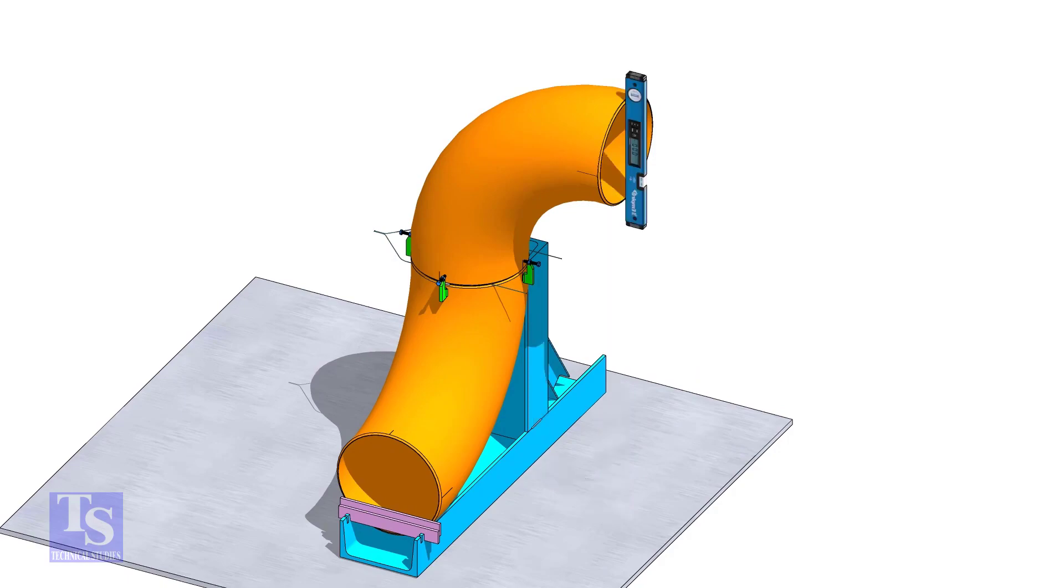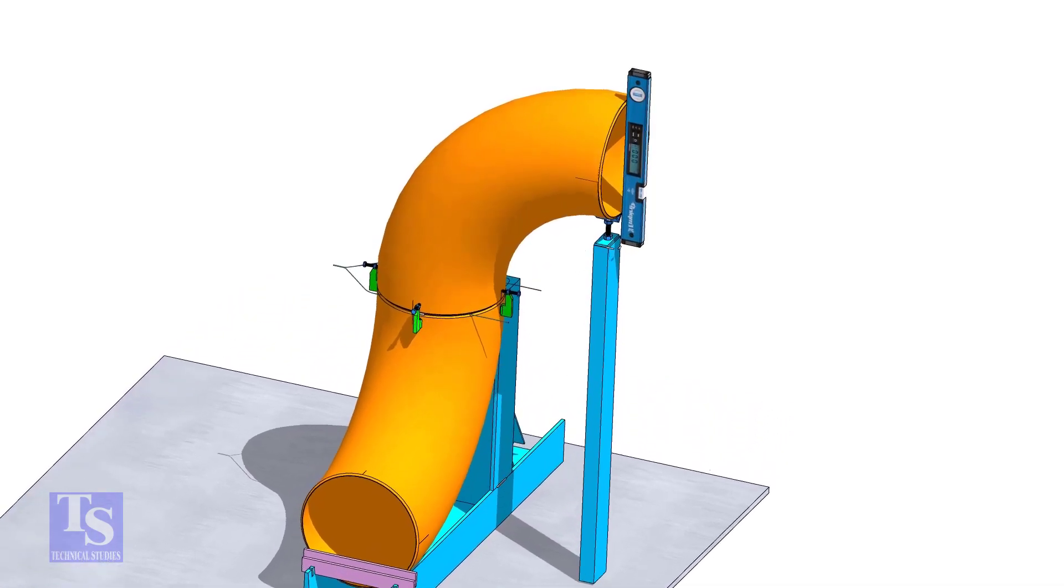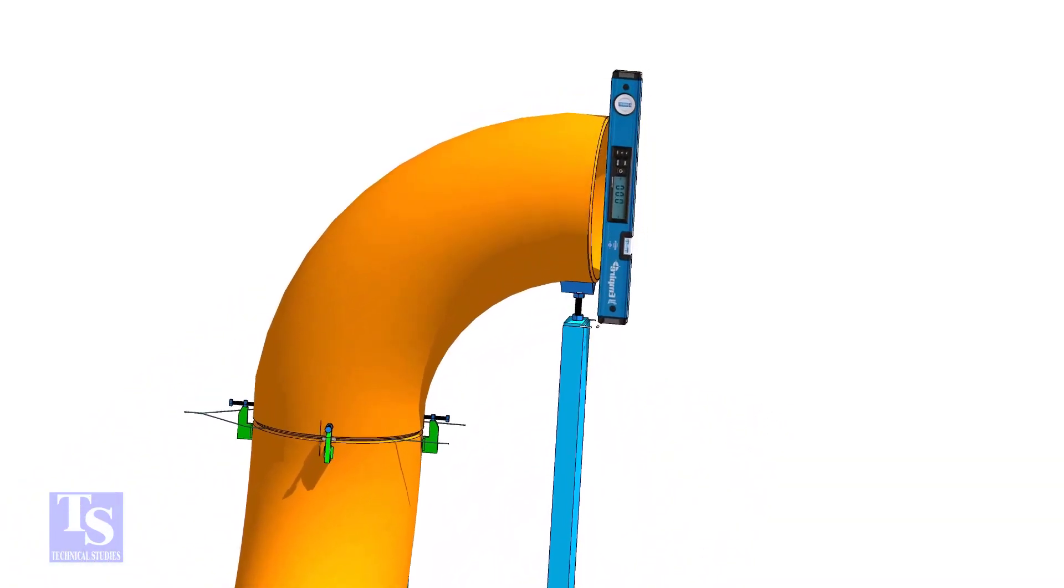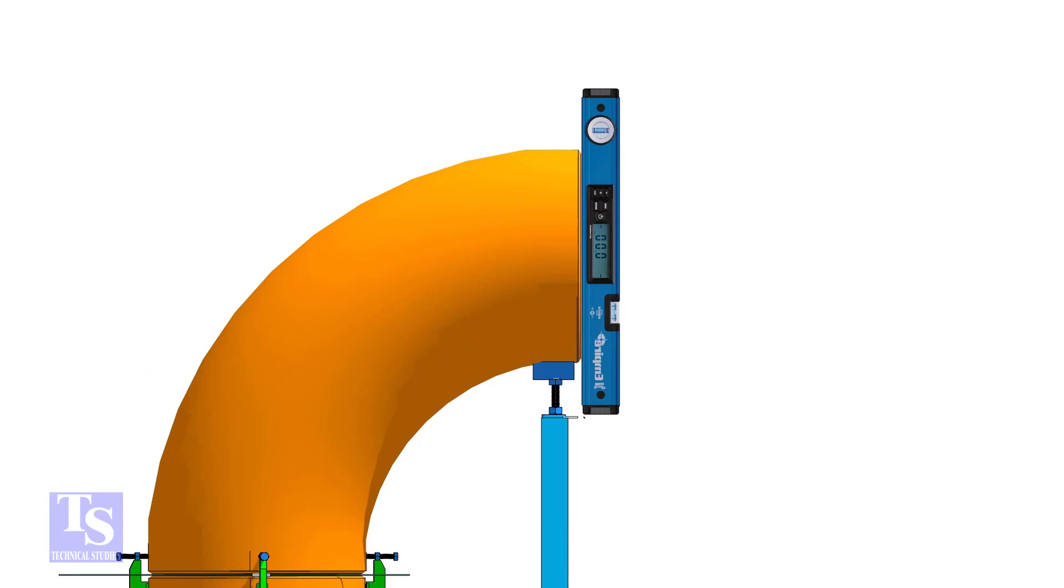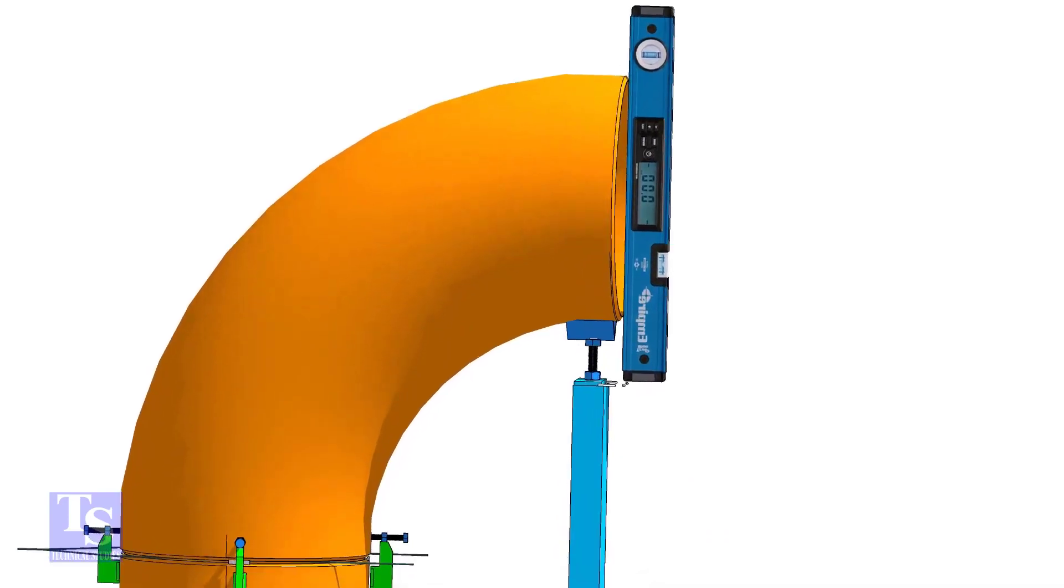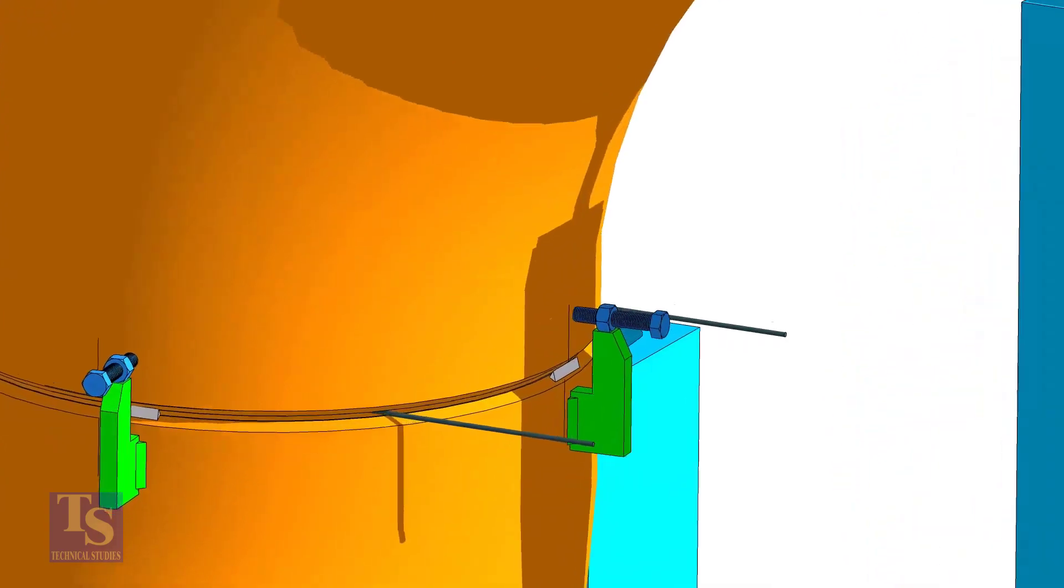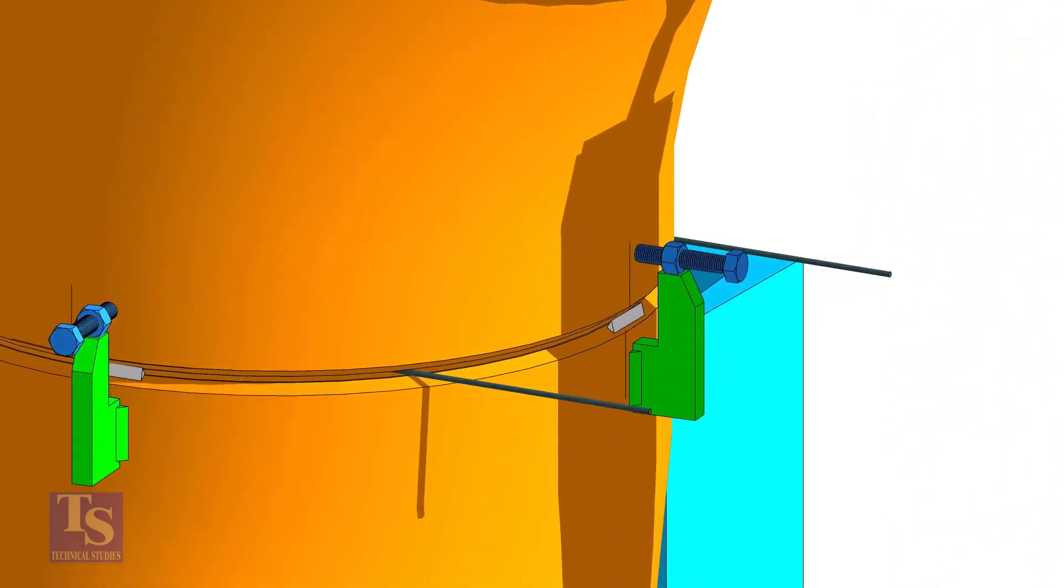Check the verticality of the elbow face. Tack weld on this side and the back side of the elbow.